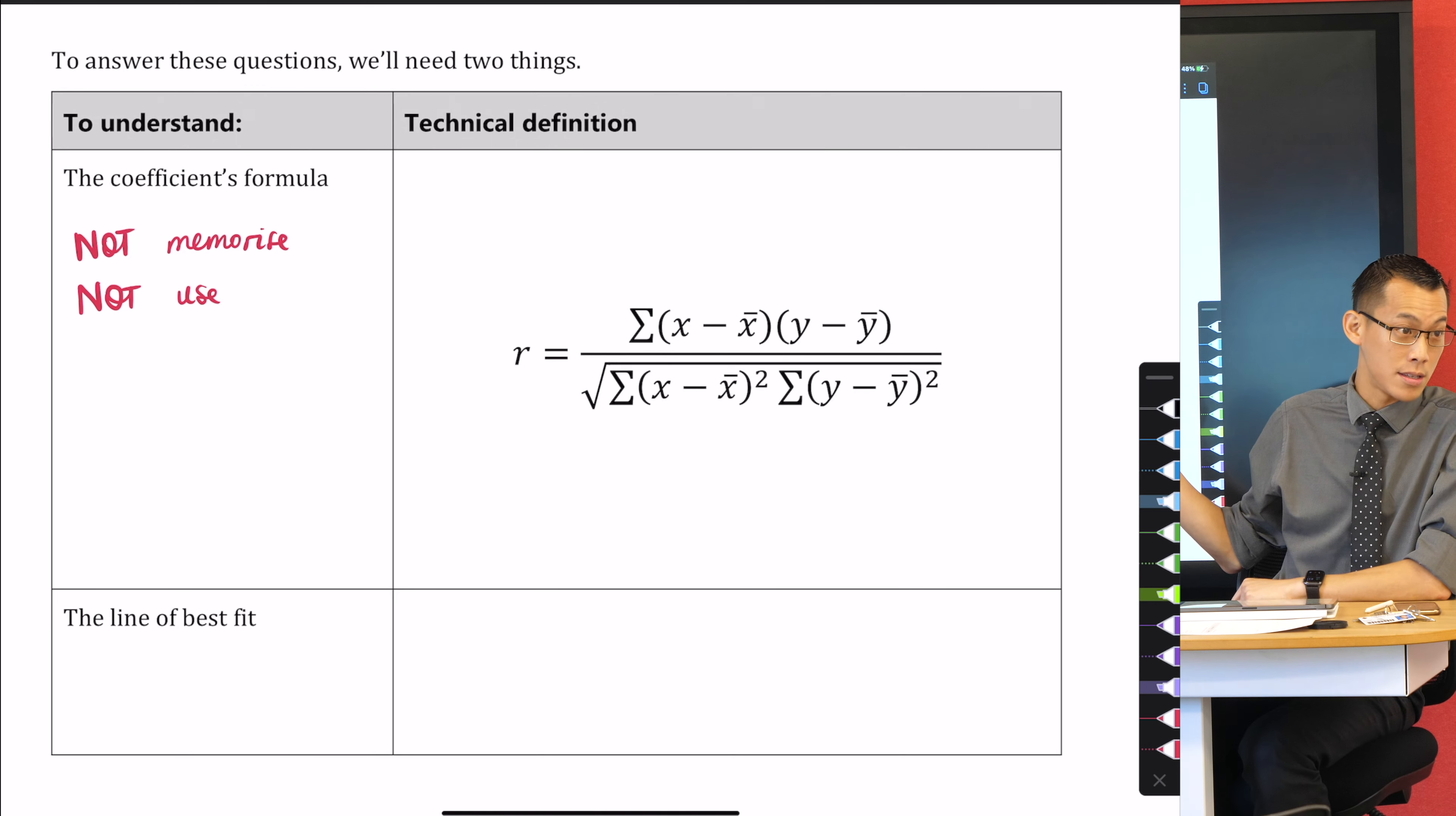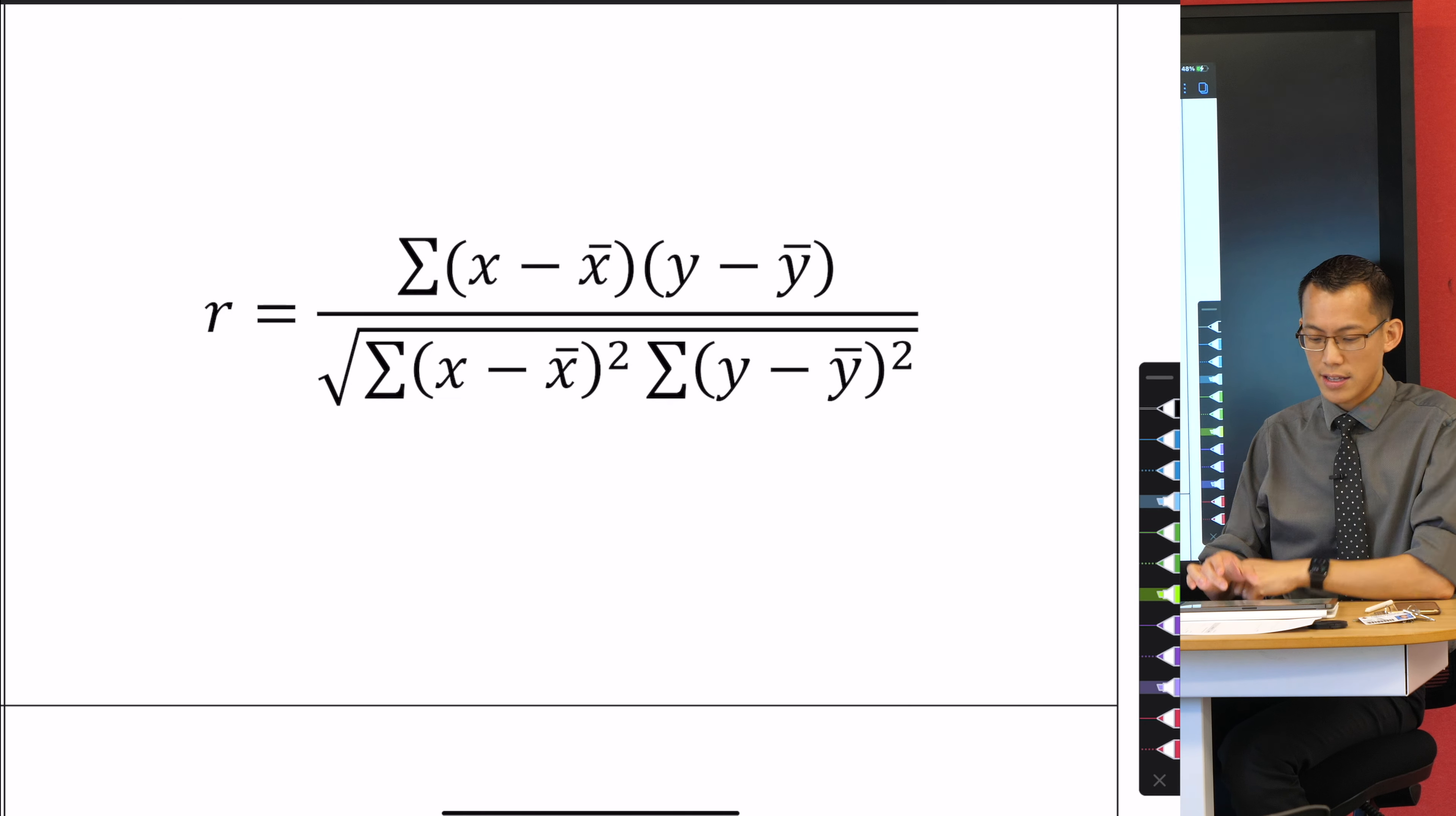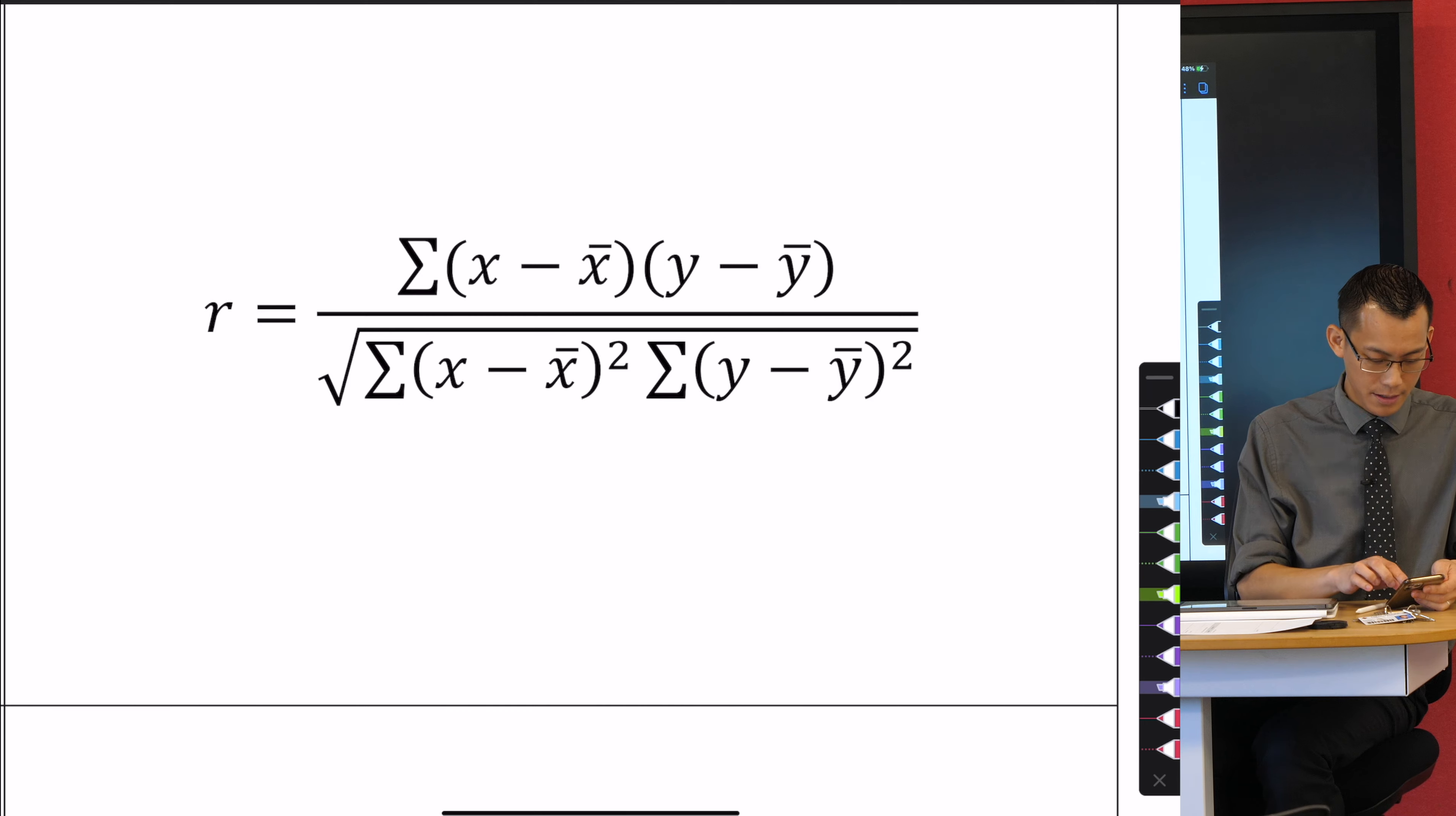But I can't explain to you what the correlation coefficient is without looking at all the pieces of this thing. So what we're going to do is step through it slowly, and you can see I've left all of this space around in that table so that we can talk about the different parts of the formula and explain what each of them does.